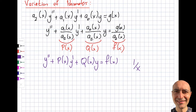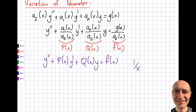Now with variation of parameters I'm going to make two major changes. The first major change is that F(x) can be anything — that's a big change. The second change is that P(x) and Q(x) don't have to be constants anymore. Variation of parameters is much more comprehensive and actually covers the undetermined coefficients section as an overarching umbrella, though there are still some limitations.